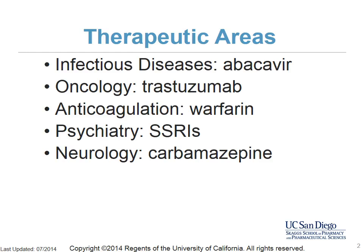We will review the use of pharmacogenomic tests in five therapeutic areas: infectious disease, oncology, anticoagulation, psychiatry, and neurology.